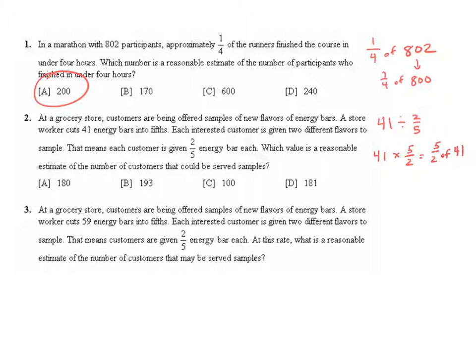I'm going to try to find a number that is compatible with two that's close to 41. I'm going to use 40. So one-half of 40 is 20, but I don't want one-half. I want five-halves, so five groups of 20 is 100.